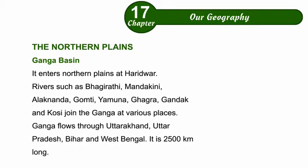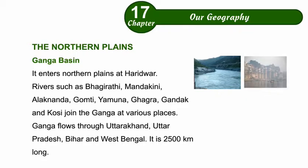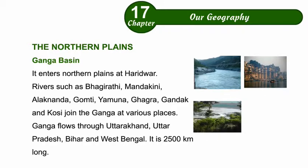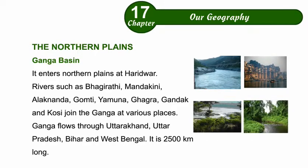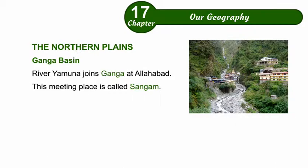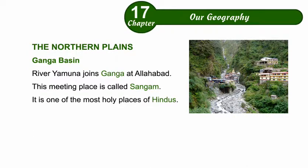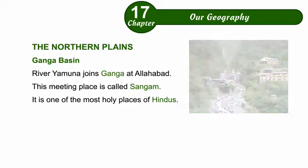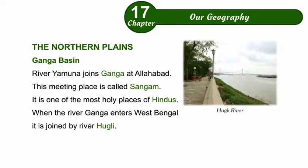Ganga flows through Uttarakhand, Uttar Pradesh, Bihar, and West Bengal. It is 2,500 km long. River Yamuna joins the Ganga at Allahabad. This meeting place is called the Sangam and is one of the most holy places for Hindus. When the river Ganga enters West Bengal, it is joined by river Hooghly.